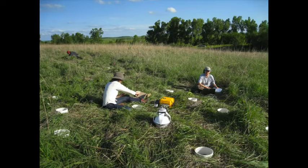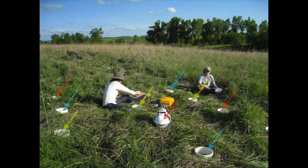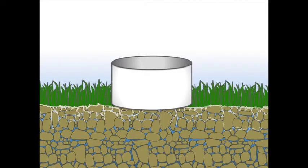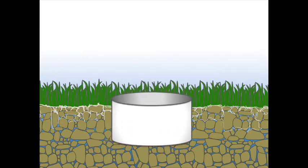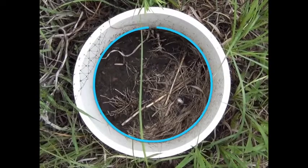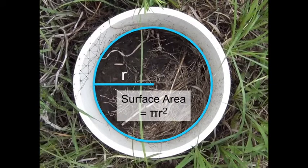In order to make a measurement, we need a confined soil surface, which is provided by these plastic collars. Each collar is pounded into the soil so that it extends a few centimeters below the surface. This minimizes diffusion of CO2 from surrounding soil and gives us a known surface area of soil so that we can calculate a CO2 efflux on a per-area basis.